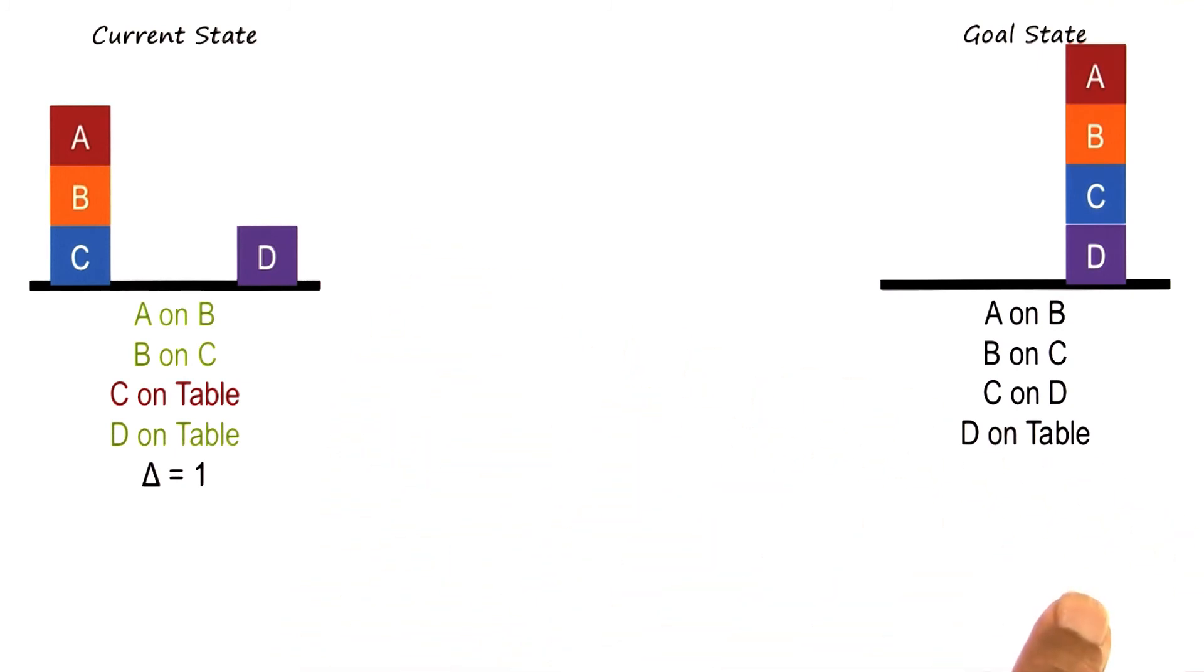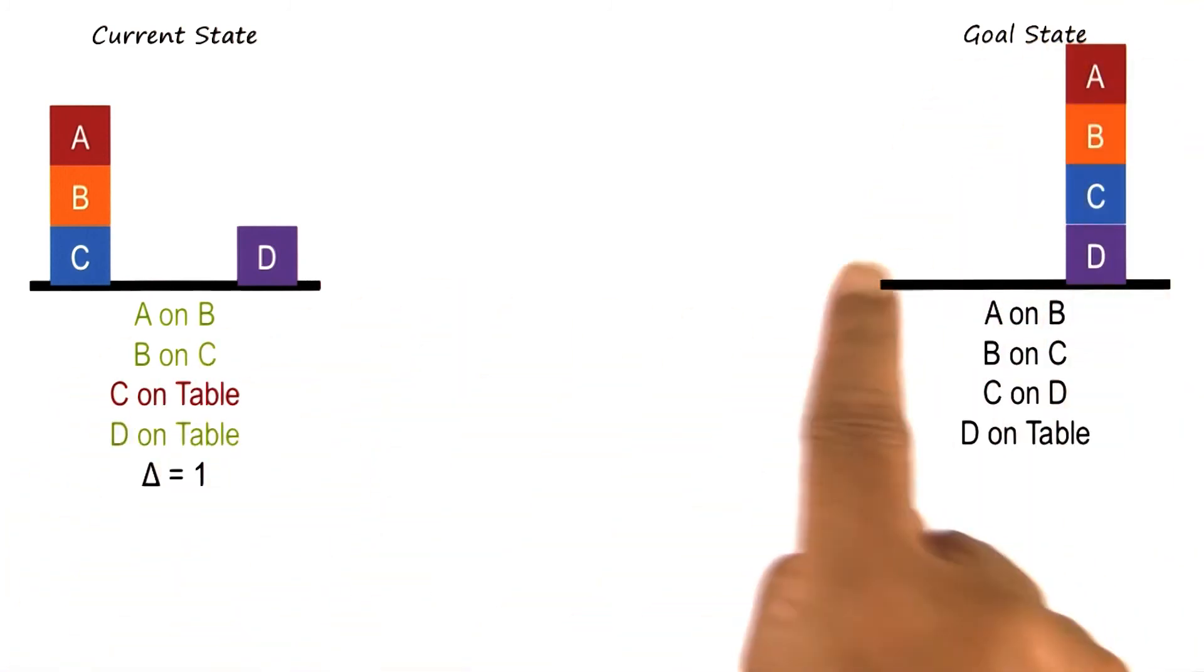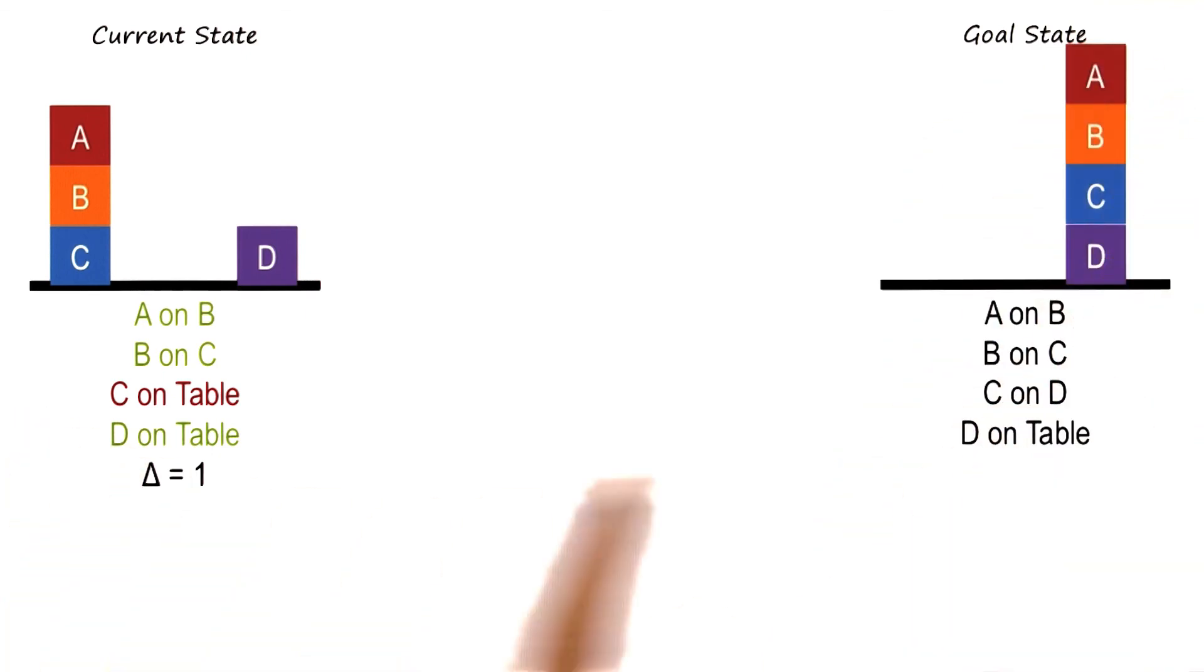When problem reduction then sets up four independent goals, we may revert back to means-ends analysis to achieve each goal independently. In this particular case, we have integrated means-ends analysis and problem reduction, and the reasoning has shifted between these two strategies in a seamless way.